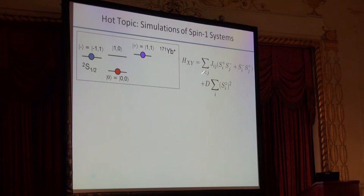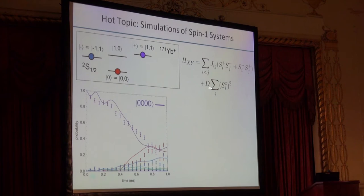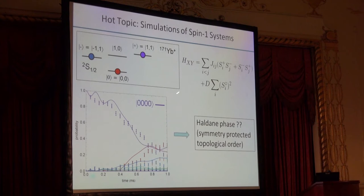We can even go a step further and add additional terms to this long-range XY type Hamiltonian, like a D sum of S_z squared type term. If we start the system in the ground state of this Hamiltonian with D very large and adiabatically ramp down this D term, we should end up in the ground state of this long-range XY model. We're very excited because we have early theoretical indications that the ground states of long-range XY models in the spin-1 system should show some character of a Haldane phase, which is a really interesting condensed matter type construct and something that's a very hot topic for people who talk about topological quantum computing.